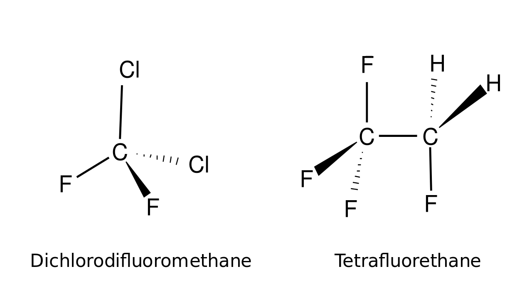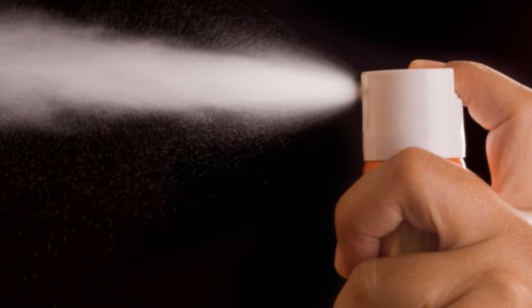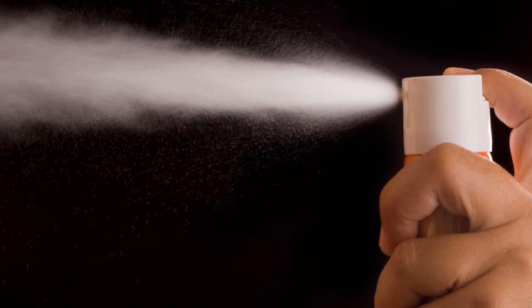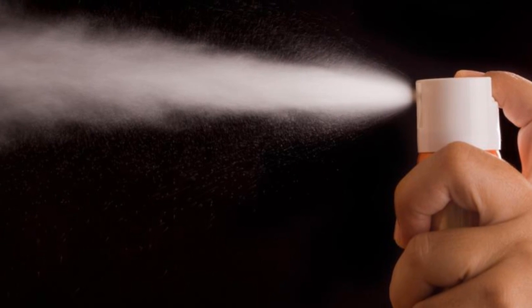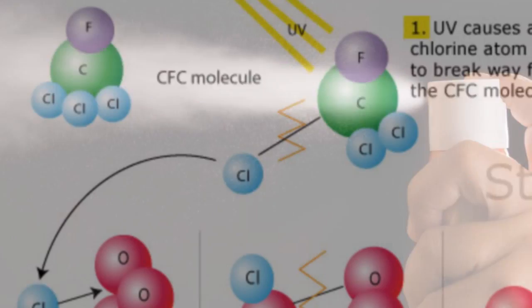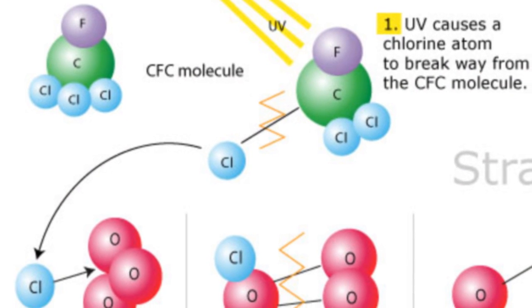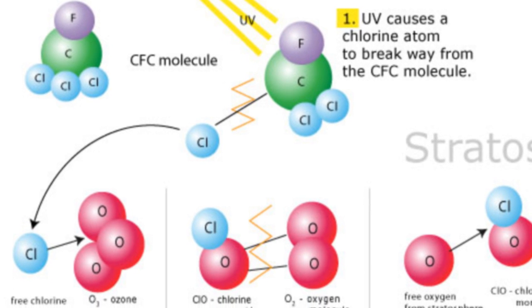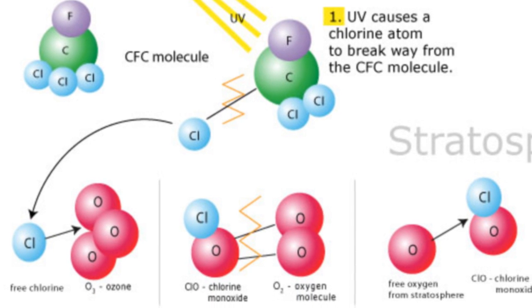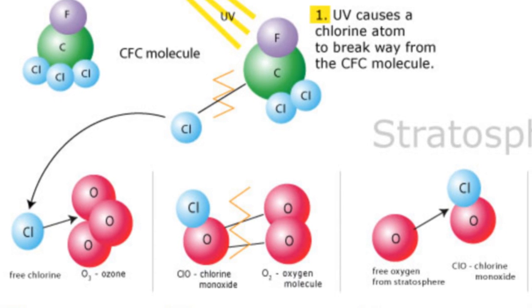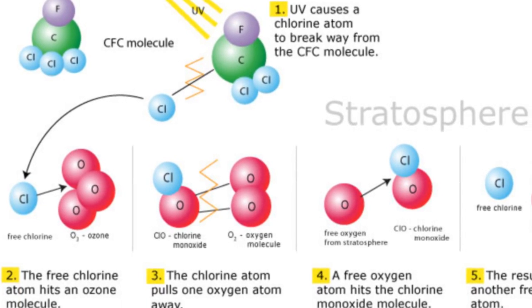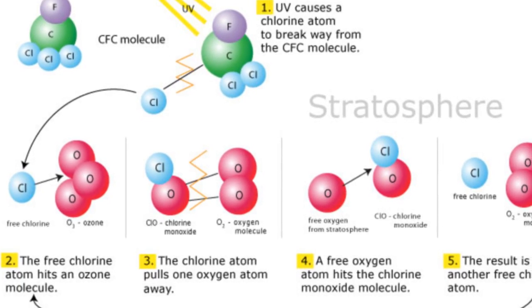Chlorofluorocarbons, CFCs, chemicals found mainly in spray aerosols, heavily used by industrial nations for the better part of 50 years, are the primary culprits for the ozone layer breakdown. When the CFCs reach the upper atmosphere, they are exposed to ultraviolet rays, which causes them to break down into substances that include chlorine. The chlorine reacts with the oxygen atoms in the ozone and rips apart the ozone molecule.